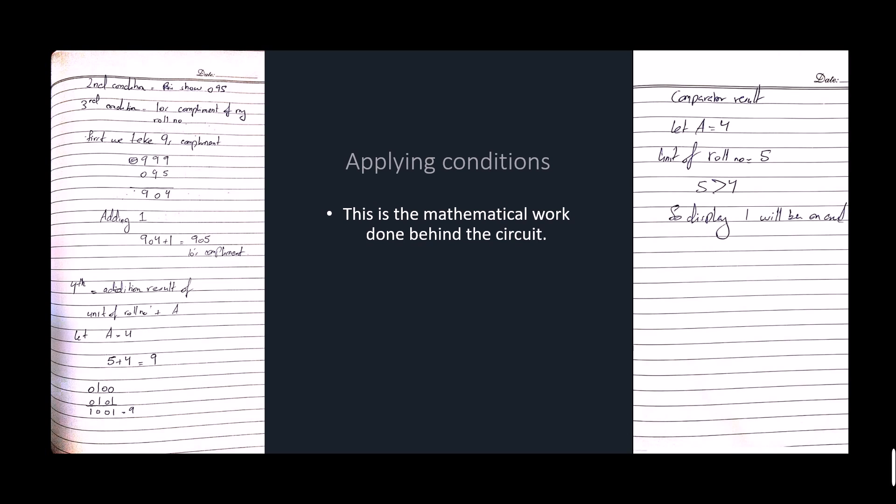The fourth condition is to find the addition result of the unit of my roll number with a number A. I suppose the number A as 4. After adding the addition result is 9. By binary form it is also 9. At the end I found the comparator result by which again I use A as 4 and the unit of my roll number is 5 and 5 is greater than 4. So display 1 will be on and it will show 1.